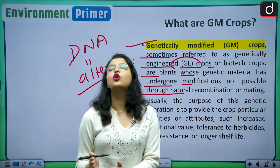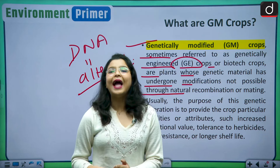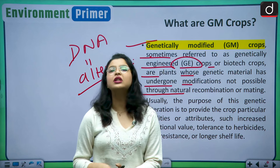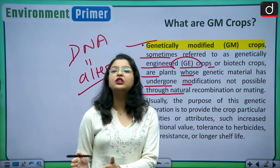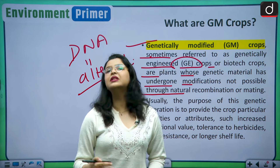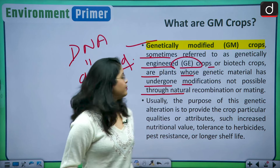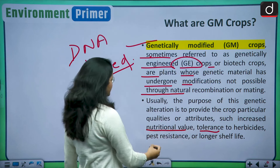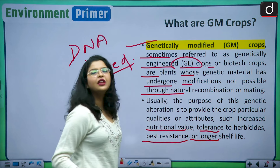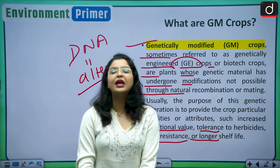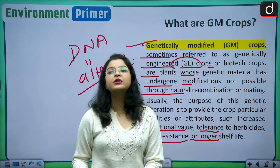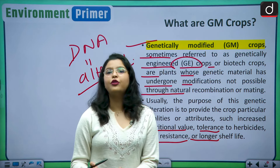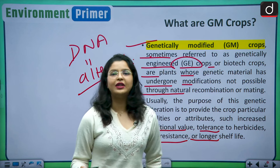Genetically modified crops, sometimes referred to as genetically engineered crops or biotech crops, are plants whose genetic material has undergone modifications not possible through natural recombination or mating. This is very different from cross-breeding of plants; it uses modern technology to interchange natural genes and introduce genes from other plant varieties to achieve desirable attributes such as increased nutritional values or tolerance to herbicides.